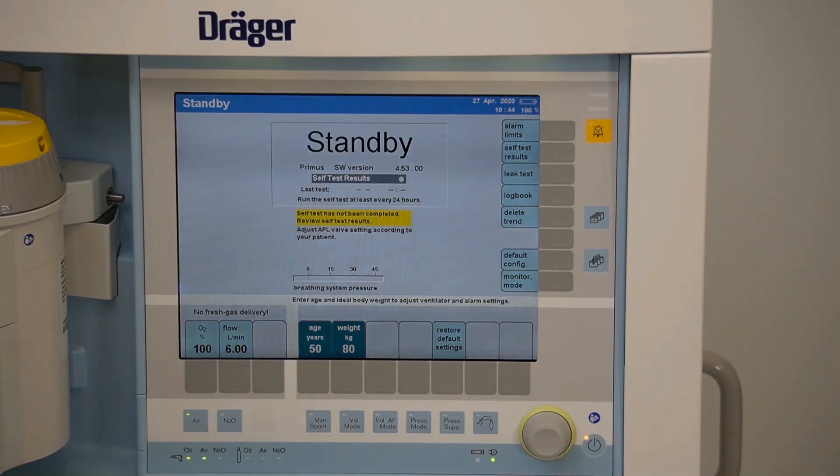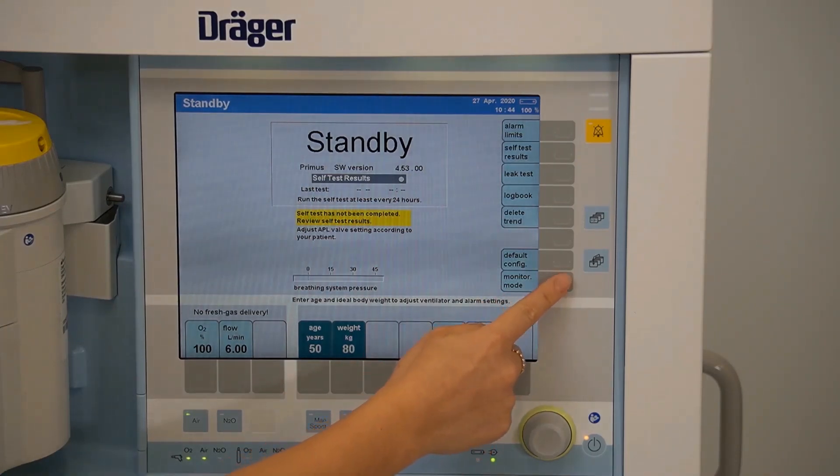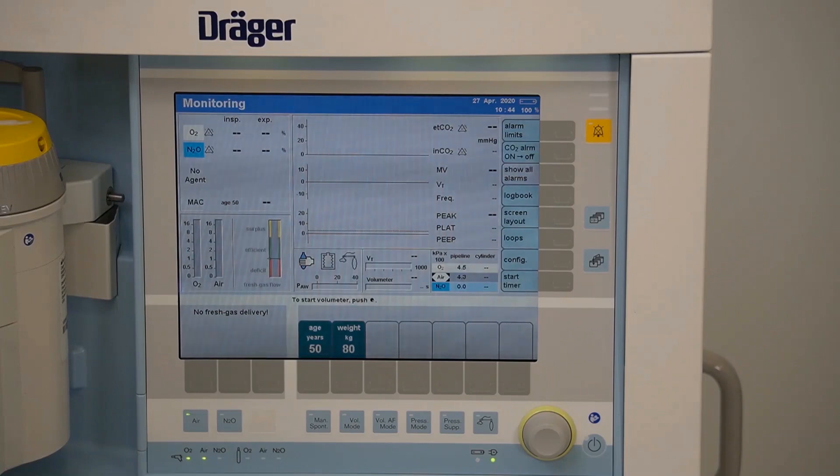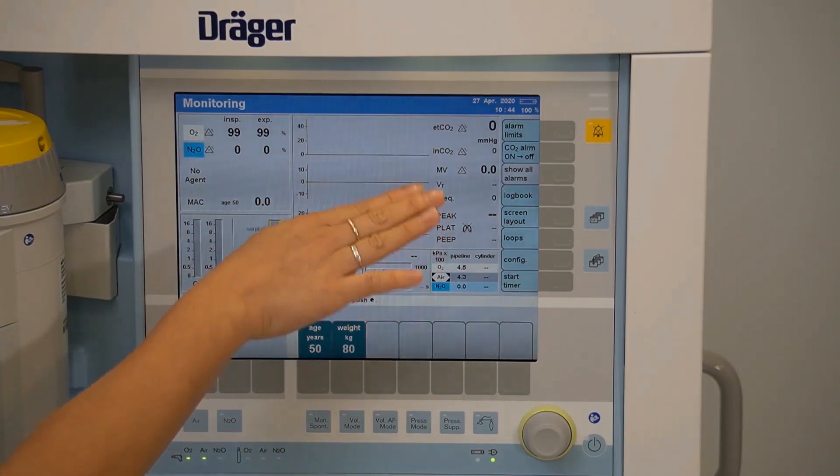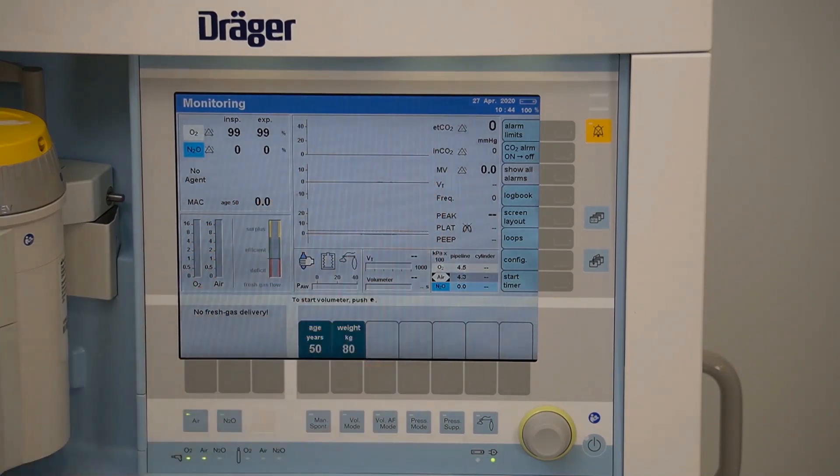To access monitor mode, this can be selected from the main screen. This mode will give you no fresh gas delivery, will monitor your CO2, and all other alarms will be paused.